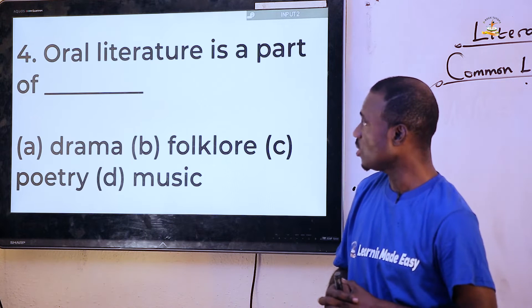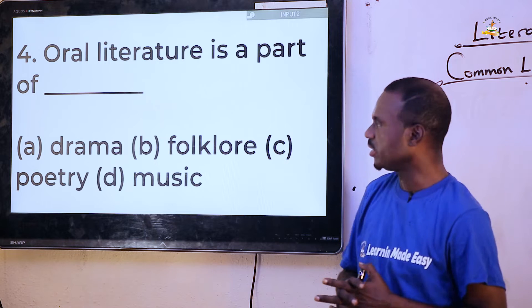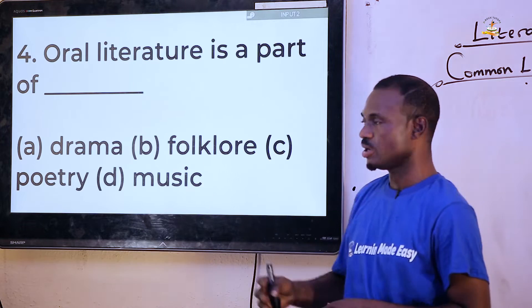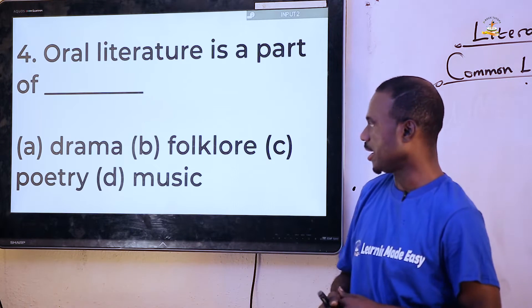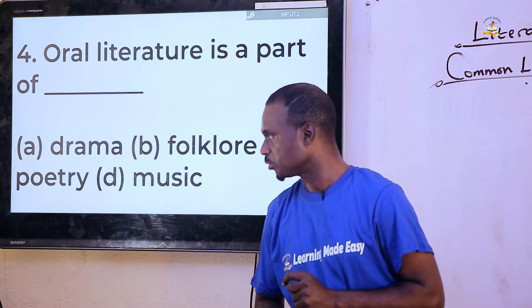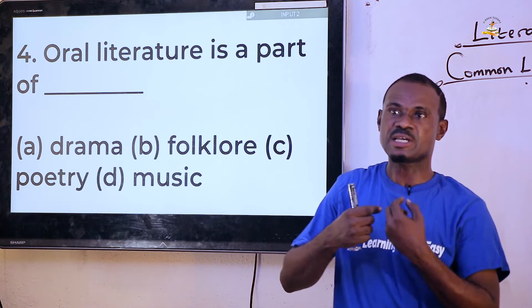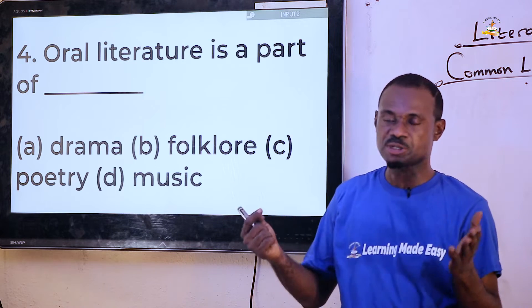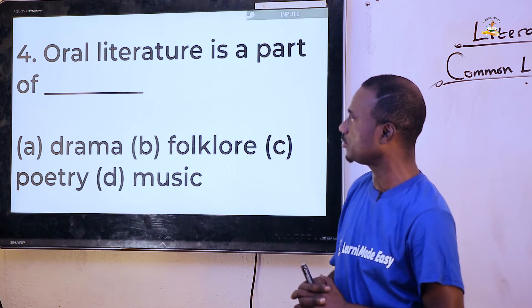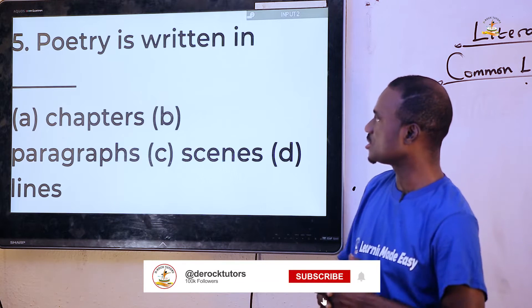Question four: 'Oral literature is a part of dash.' Options are drama, folklore, poetry, and music. You can't go for music, poetry, or drama. The answer is folklore. Folklore is a type of oral literature, and the opposite of that can be said to be folktale.